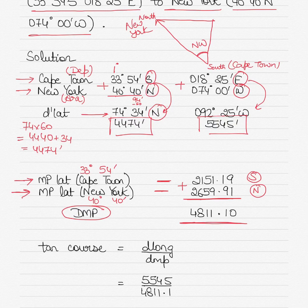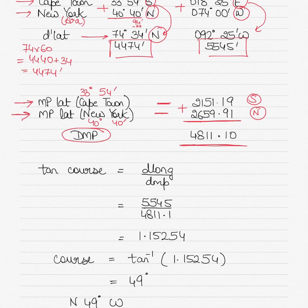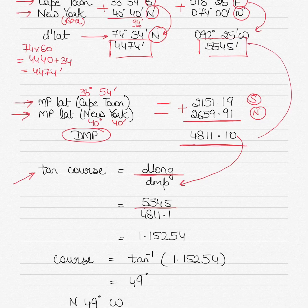Once you've got the three values—the D'lat, the D'long, and the DMP—all you have to do is put them in the formula. The first formula is tan course equals D'long by DMP. You have D'long 5545, and the rule of thumb is if there is no sine, cos, tan, cosecant, secant, cotangent before the value, always write it in minutes. D'long divided by DMP: you get tan course equals 1.15254.